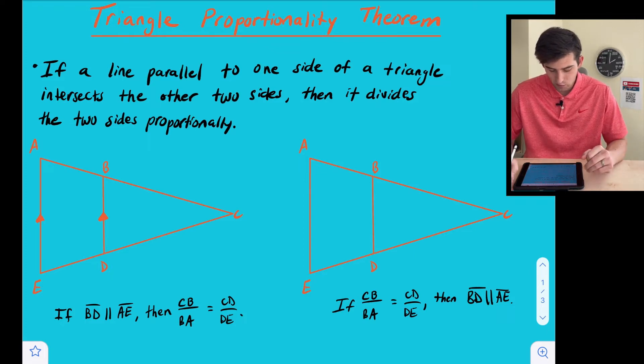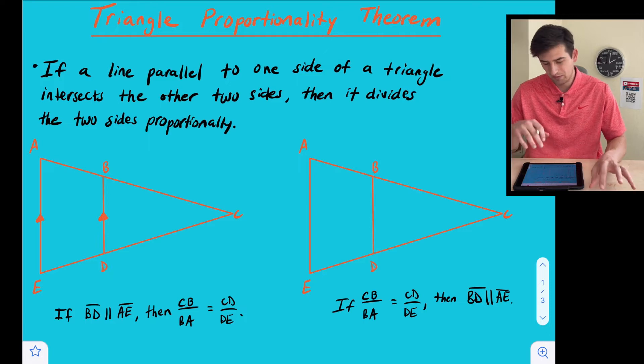It says if a line parallel to one side of a triangle intersects the other two sides, then it divides the two sides proportionally. So let's look at two examples or diagrams that can give us an image of what this theorem actually looks like.